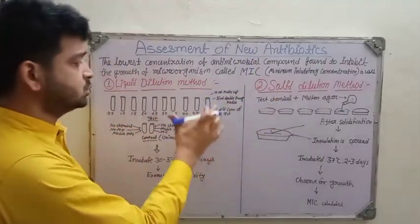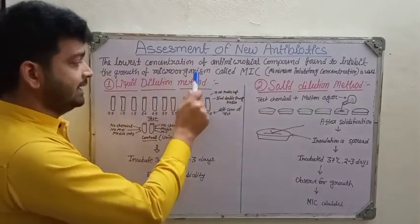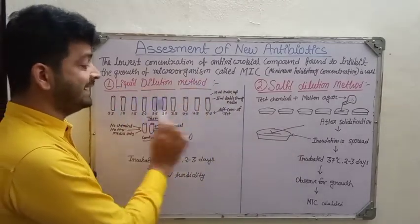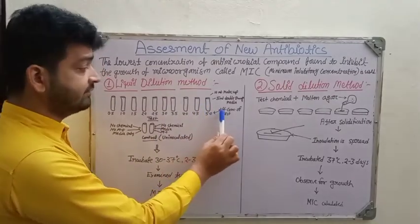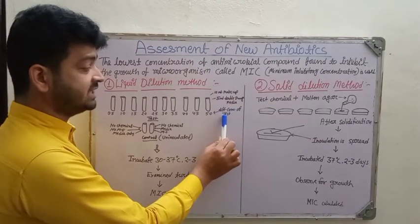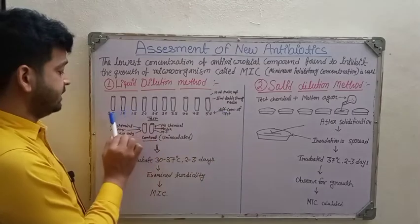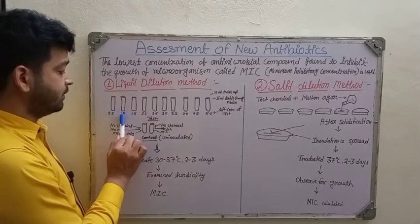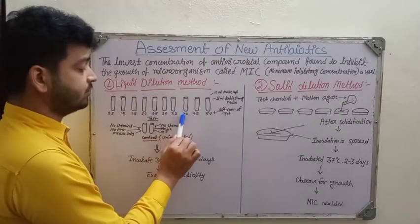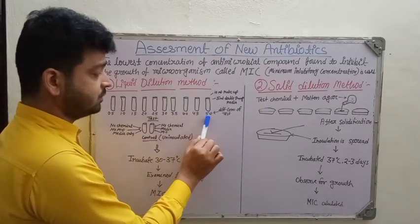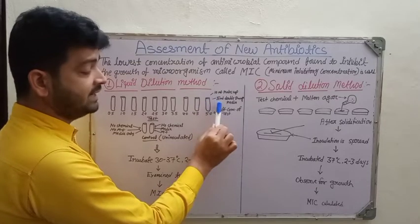The first method is the liquid dilution method. Here we take 10 clean test tubes and fill each with a different concentration of the test antibiotic or test antimicrobial agent — for example, 0.5, 1.0, 1.5, 2.0, 2.5, 3.0, 3.5, 4.0, 4.5, and 5.0.